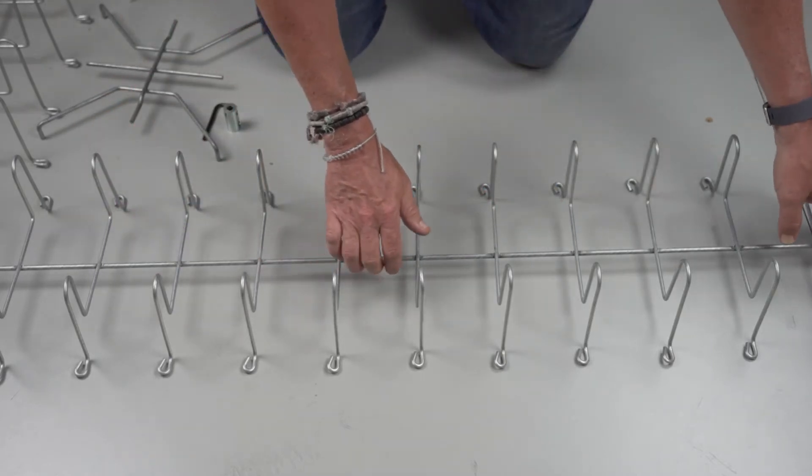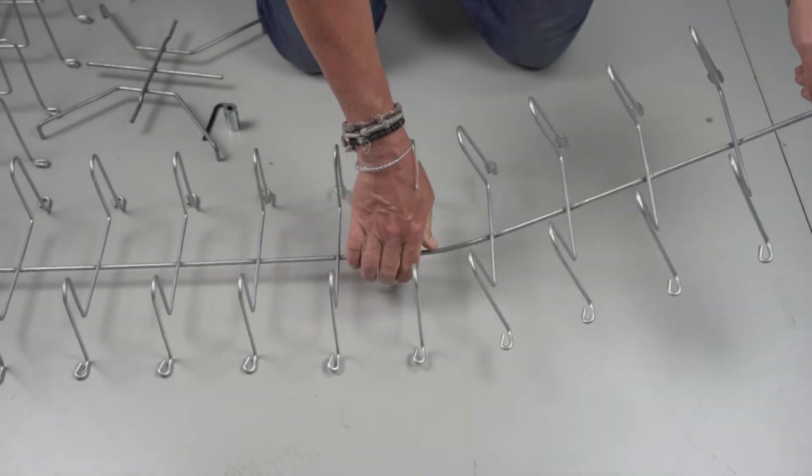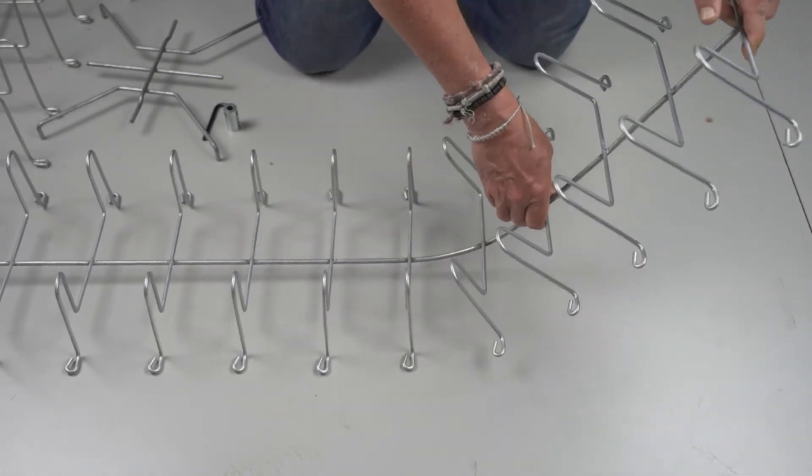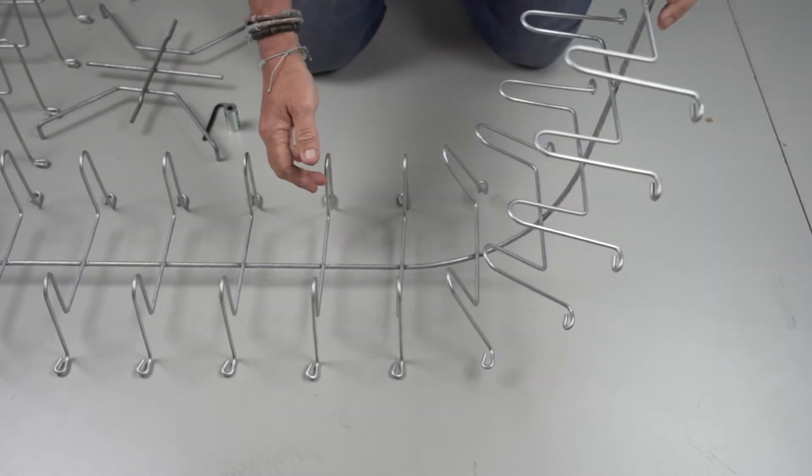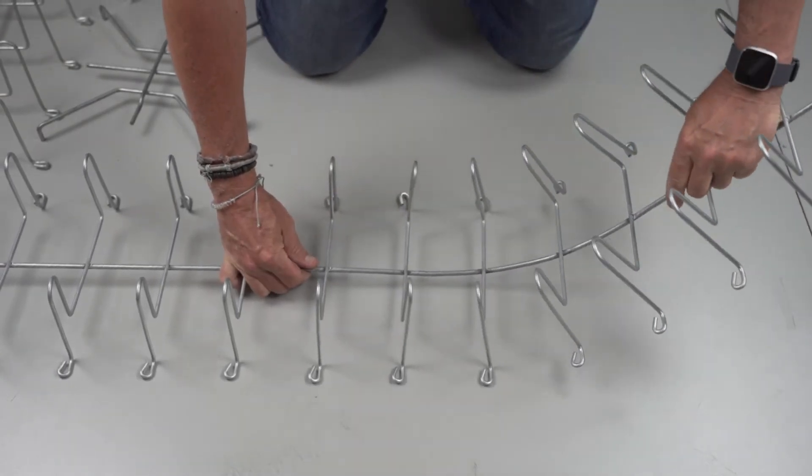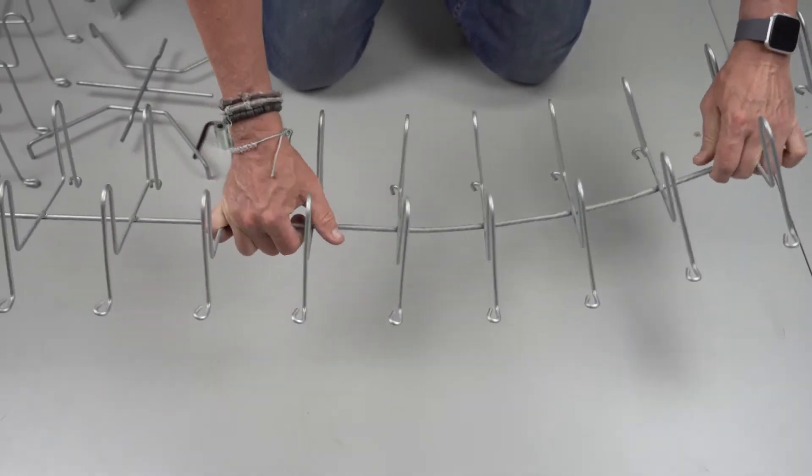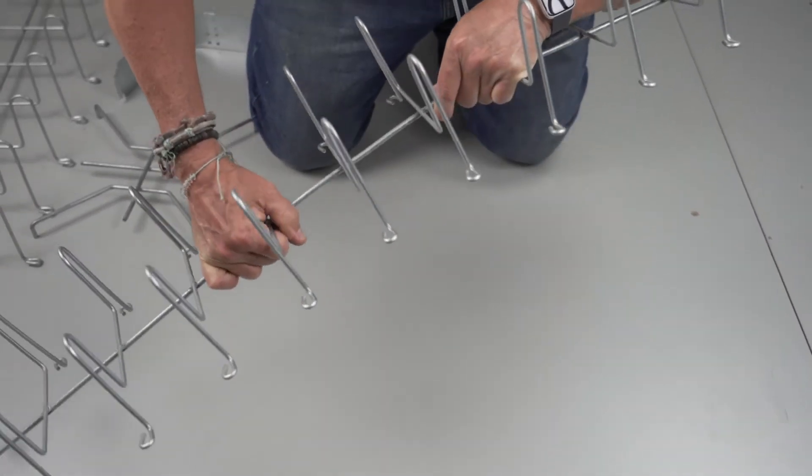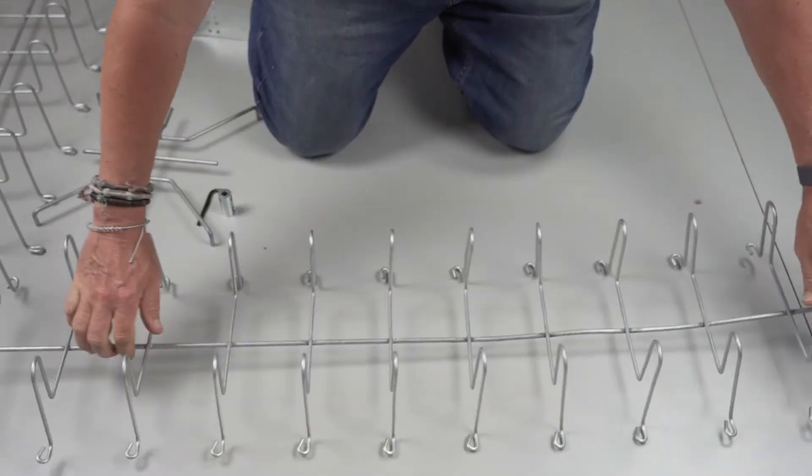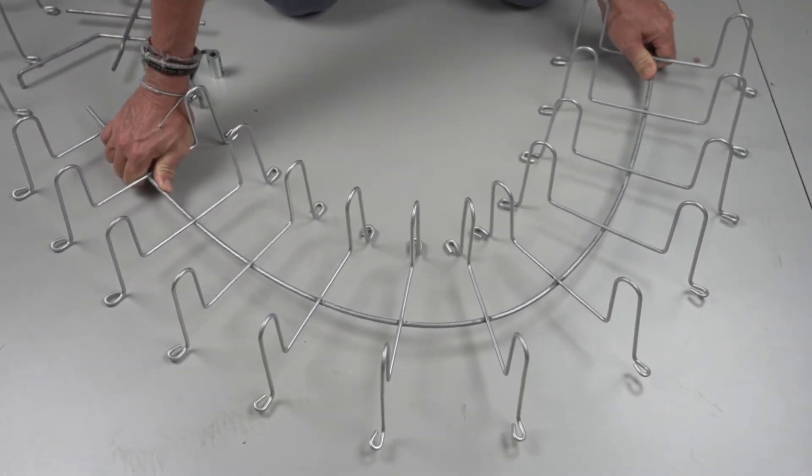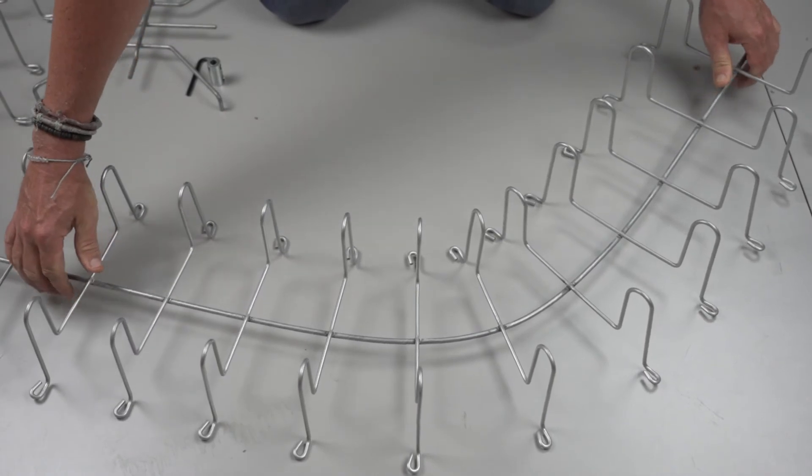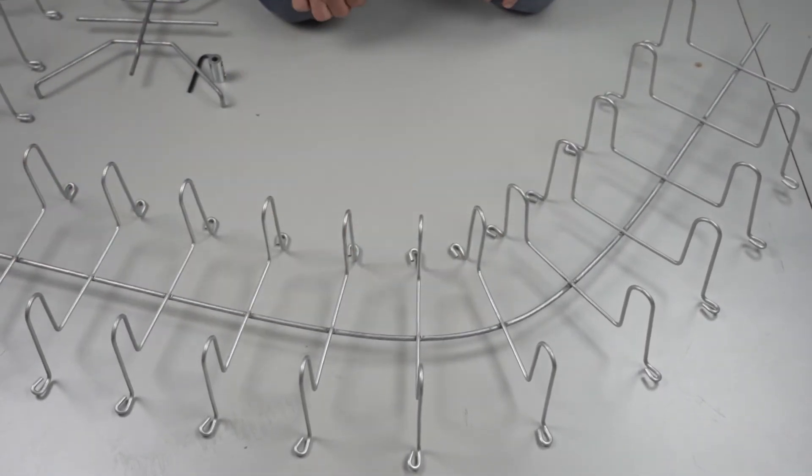What this allows us to do is make very simple directional changes by easily bending that center spine into the shape that we need. If that's put into the wrong place we can always take the bend out and start over and we can also do horizontal directional changes as well just as simply by bending that center spine.